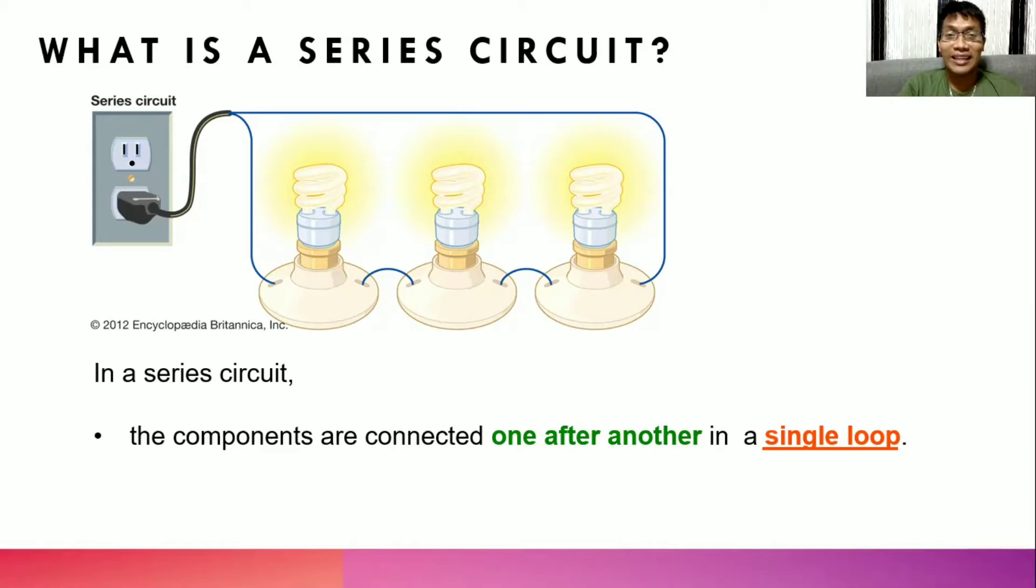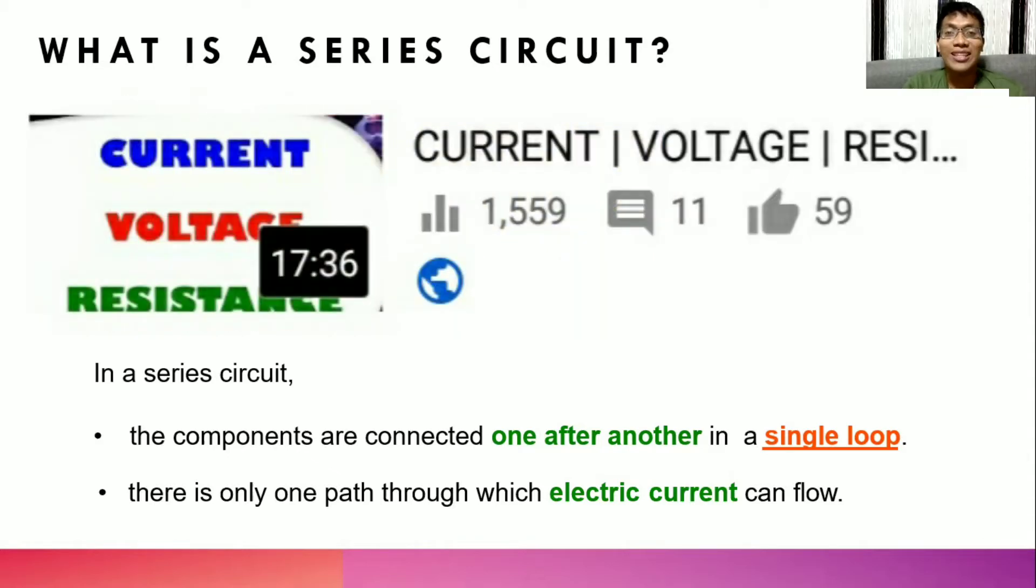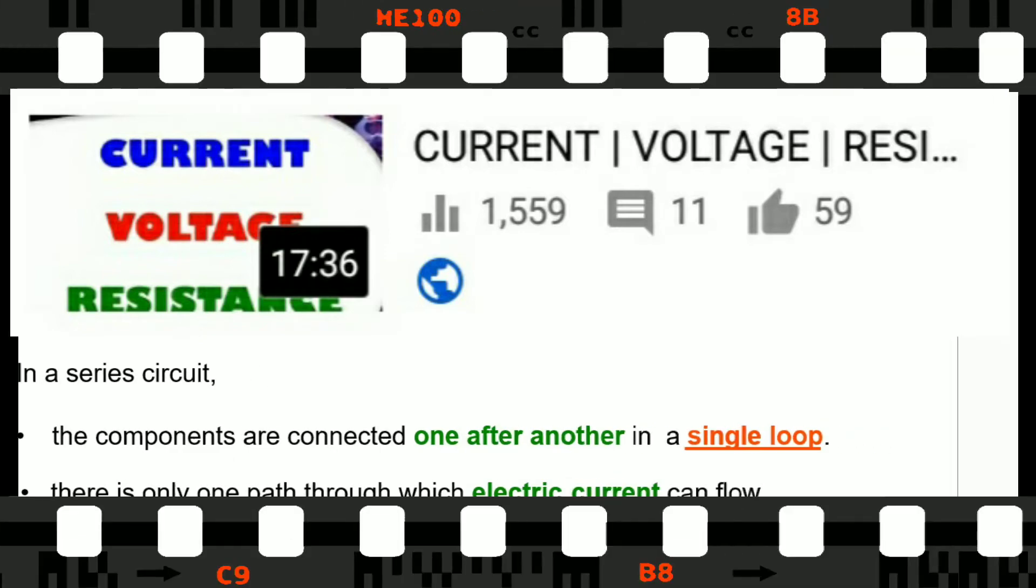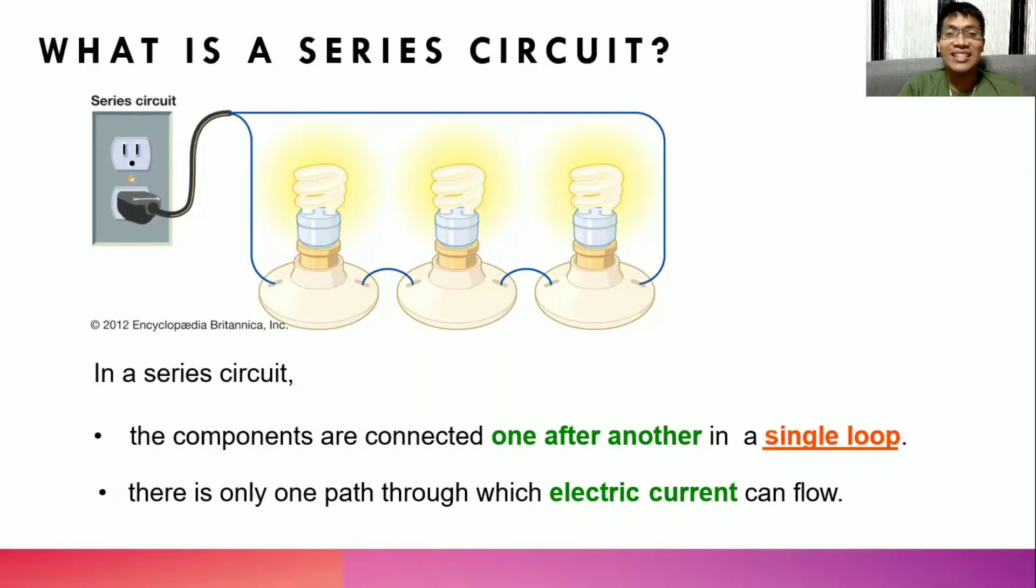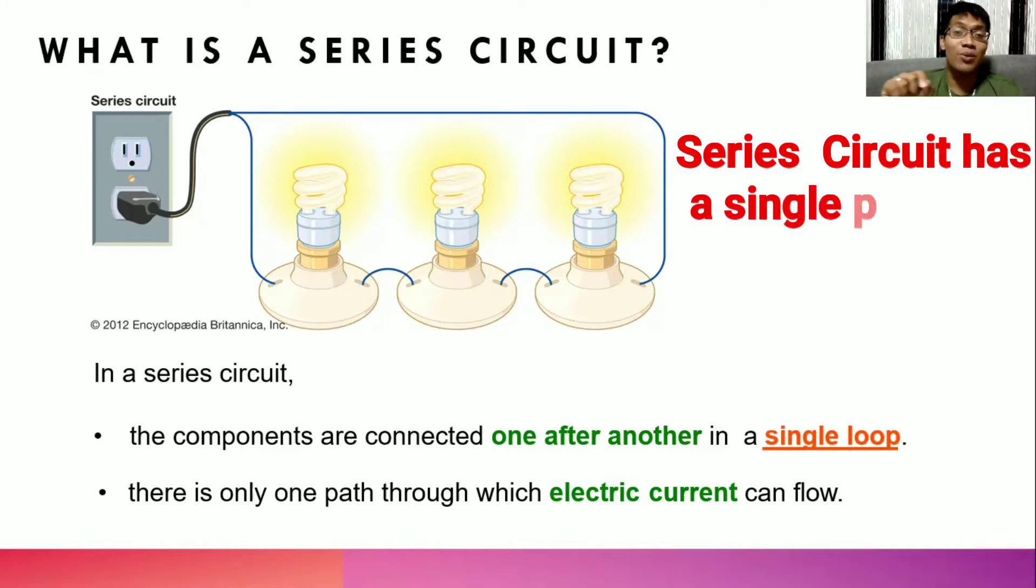Knowing this idea, we can also tell that there is only one pathway through which the electric current can flow. When we say electric current, as we discussed in the previous vlog, we describe it as the rate of flow of charges. And since the series circuit has a single loop, therefore, all the charges can only pass through in a single pathway.